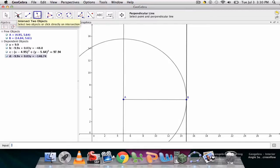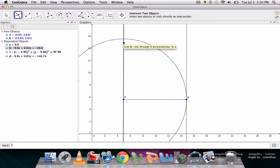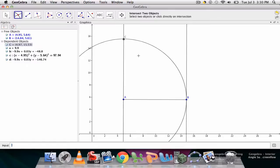Over here I select my intersect two objects tool and I want to intersect my perpendicular line and my circle. Hover over here and I create point C.